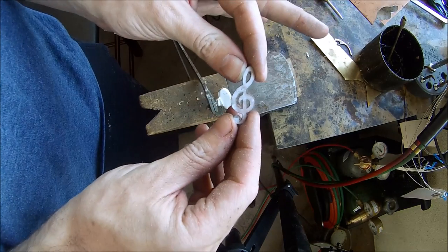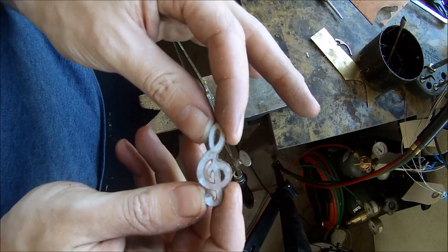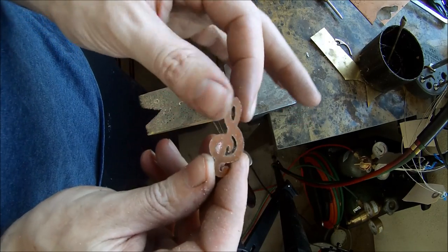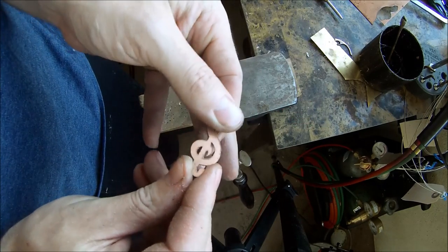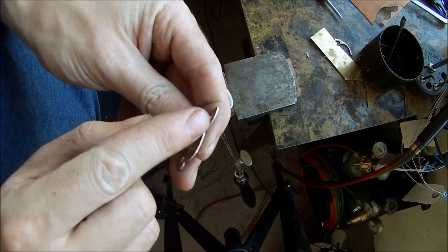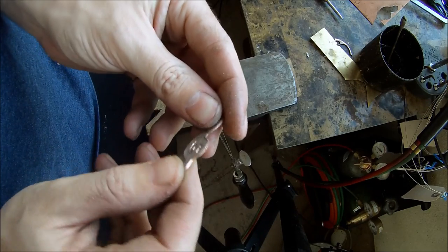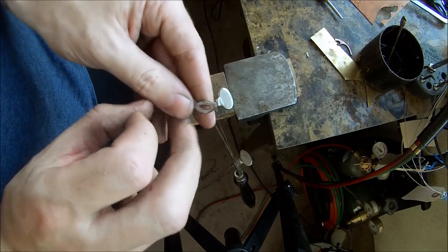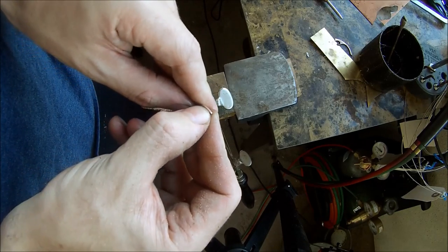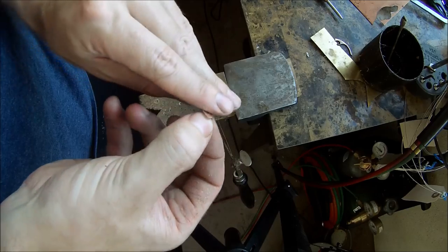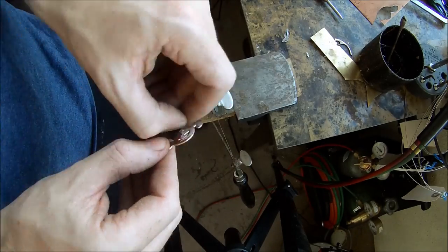Alright, there we go, all cut out. And flip it over, make sure everything's nice and clean. You're going to have a burr along all the edges that you're going to need to file down, but yeah, that's basically what happens after you cut it out. And now I just need to peel this off with a knife, most likely.